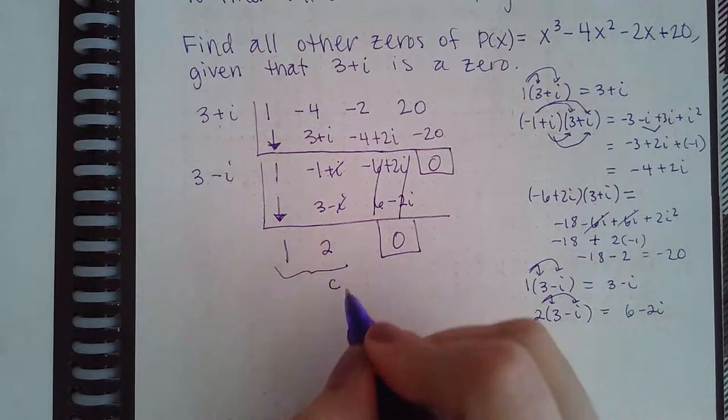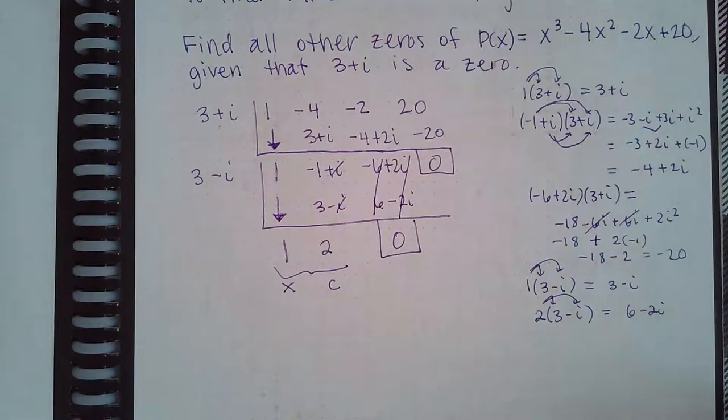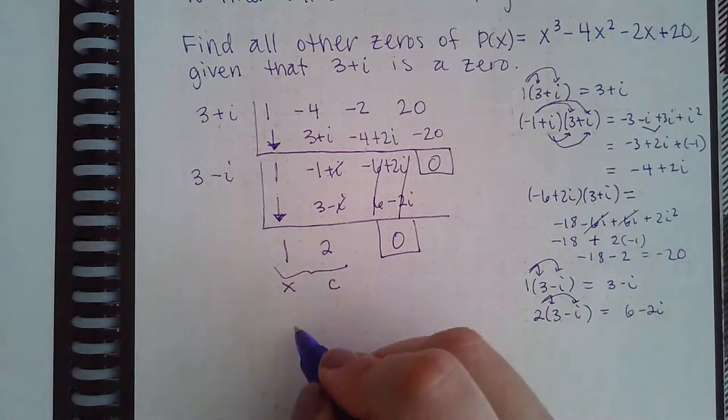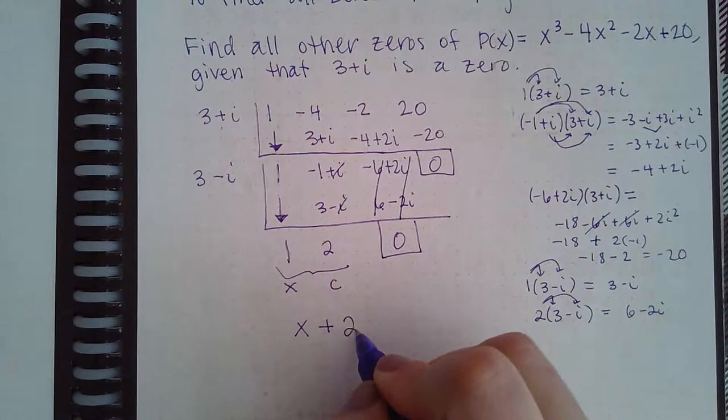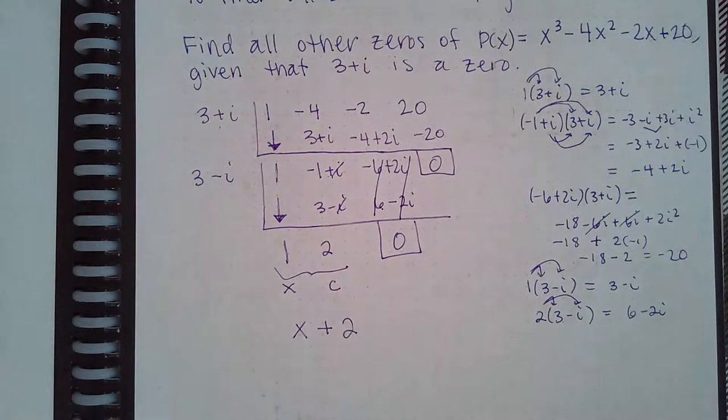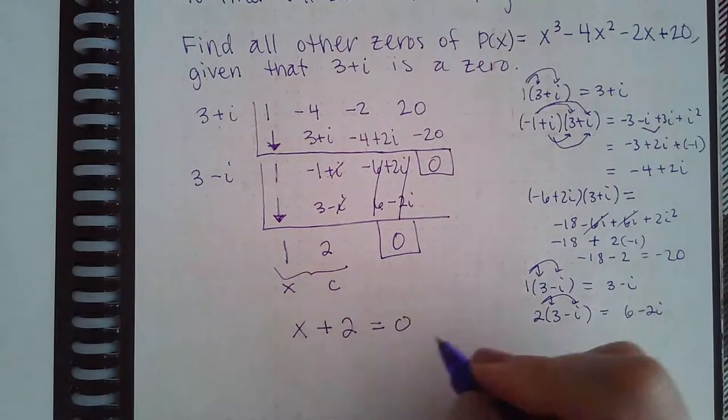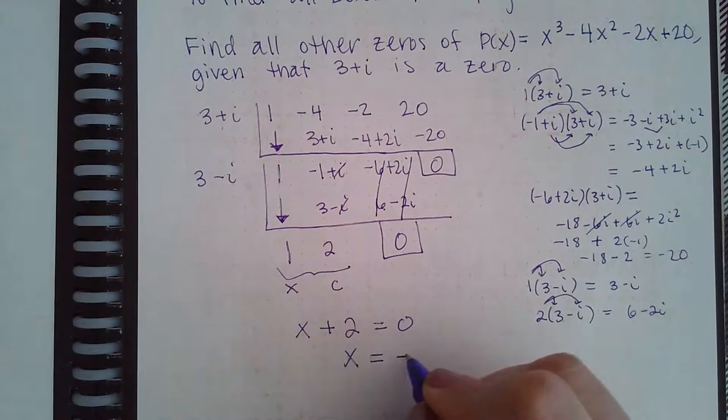Now I've got to convert this back into its variables. Remember, this is the constant, this is your x coefficient. So this in an expression turns into 1x plus 2. And then if I set the 1x plus 2 equal to 0, I will get that x equals negative 2 is the other zero.